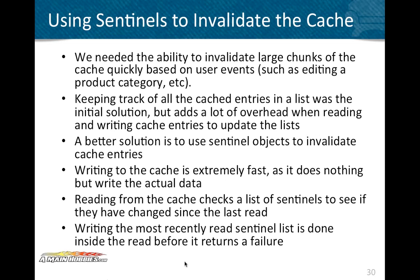One thing we wanted was the ability to invalidate large chunks of the cache quickly when something like a product category gets edited. With the file system approach, we tracked all files and deleted them. Our initial Couchbase solution tracked cache entries in a list — similar to a directory of files — creating a list of all related cache entries. When we needed to invalidate, we'd grab the list and enumerate over all items to evict them. However, managing those lists had quite a bit of overhead: as thousands of items filled the cache, the list got very large, adding more and more overhead on every write.